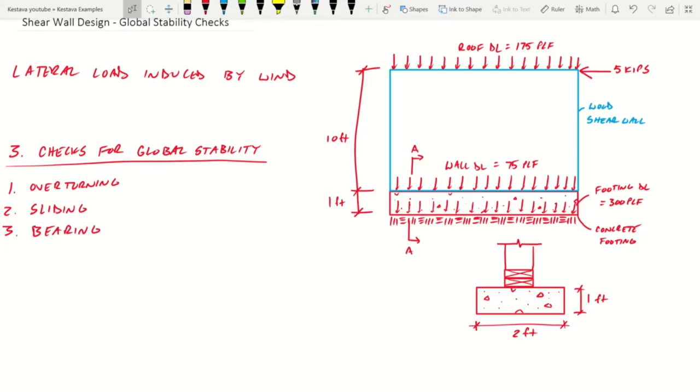What's up team? Kesteva back here with another lesson. Today we're going to be designing shear walls. And more importantly, the first thing we do when we start designing our shear walls is we check global stability. There are a couple of different checks that you need to go through in order to assure that your shear wall is globally stable. We're going to walk through those with a nice little example for you.